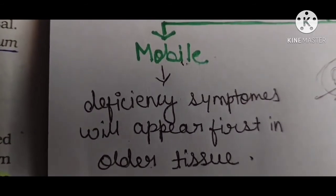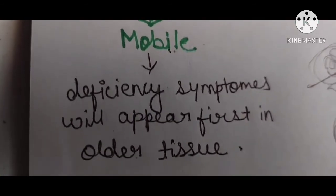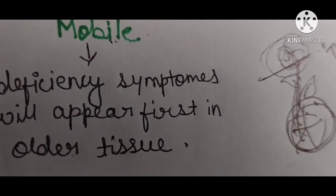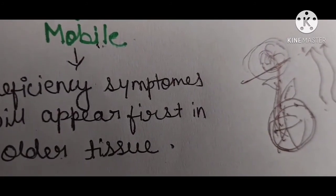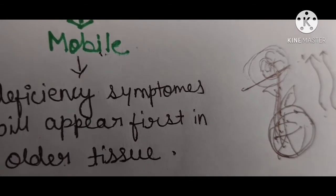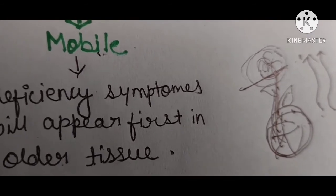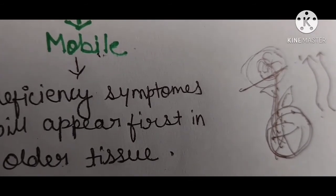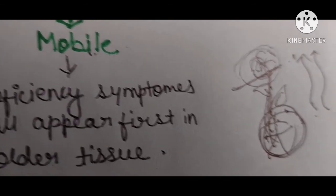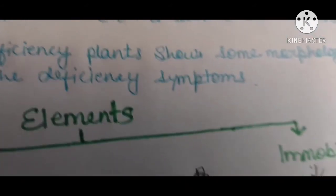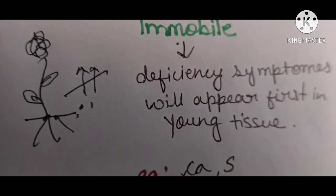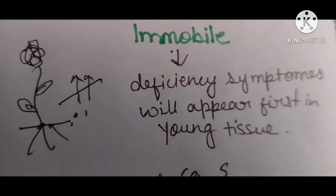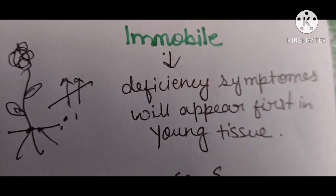For mobile elements such as potassium, phosphorus, and nitrogen, what happens is that they move toward the top of the plant. So the lower tissue becomes deficient and the deficiency appears in the middle or older parts of the plant.